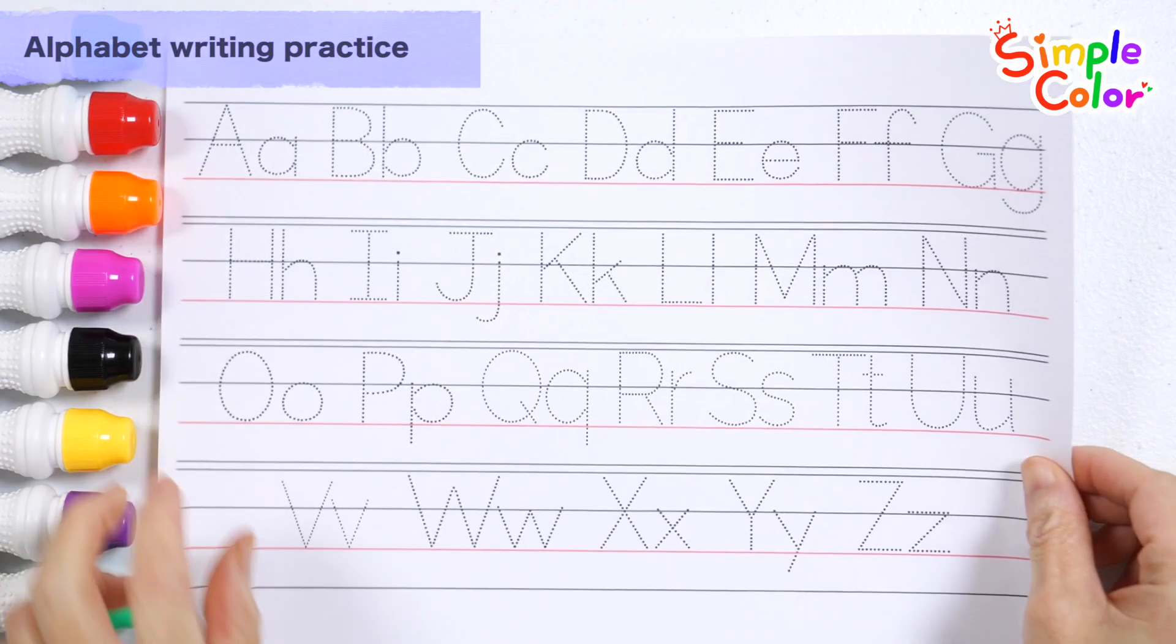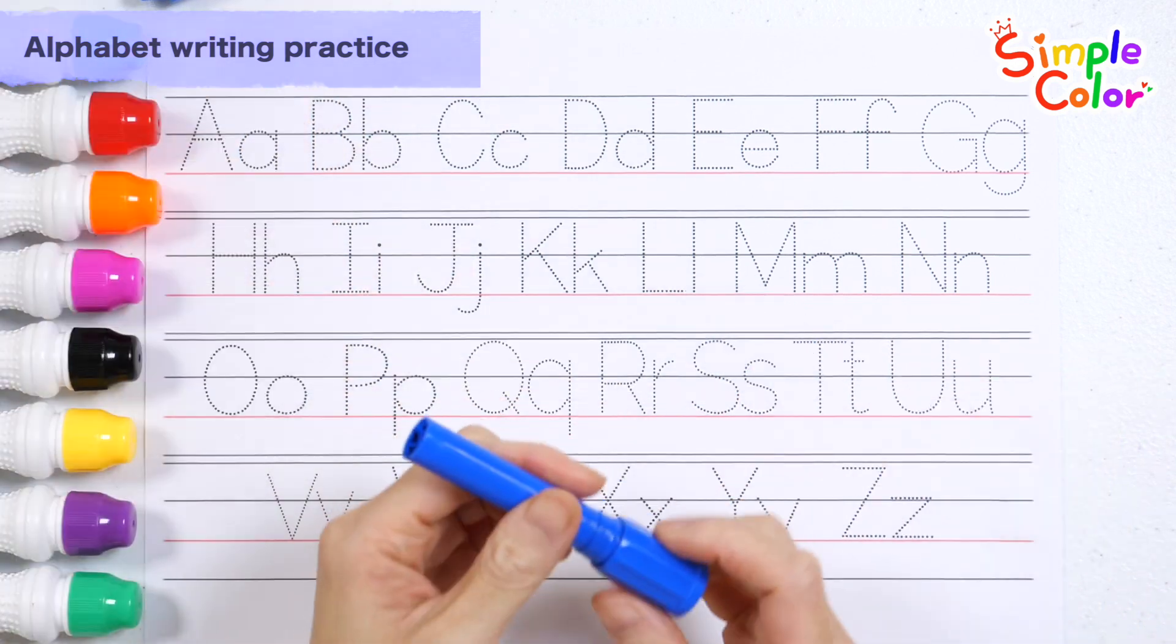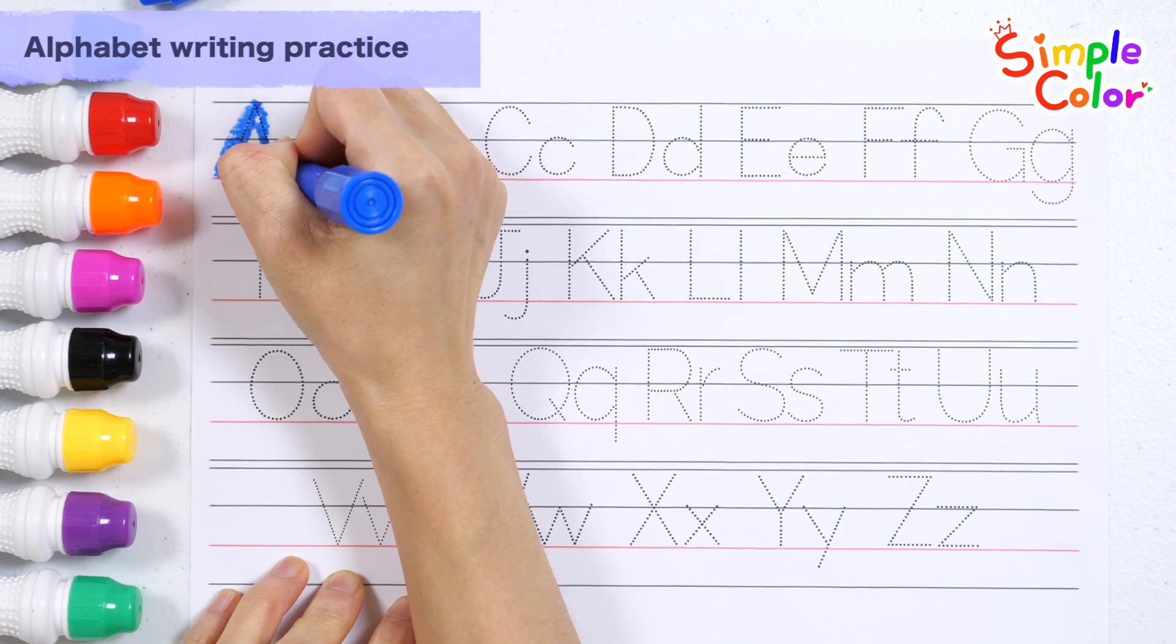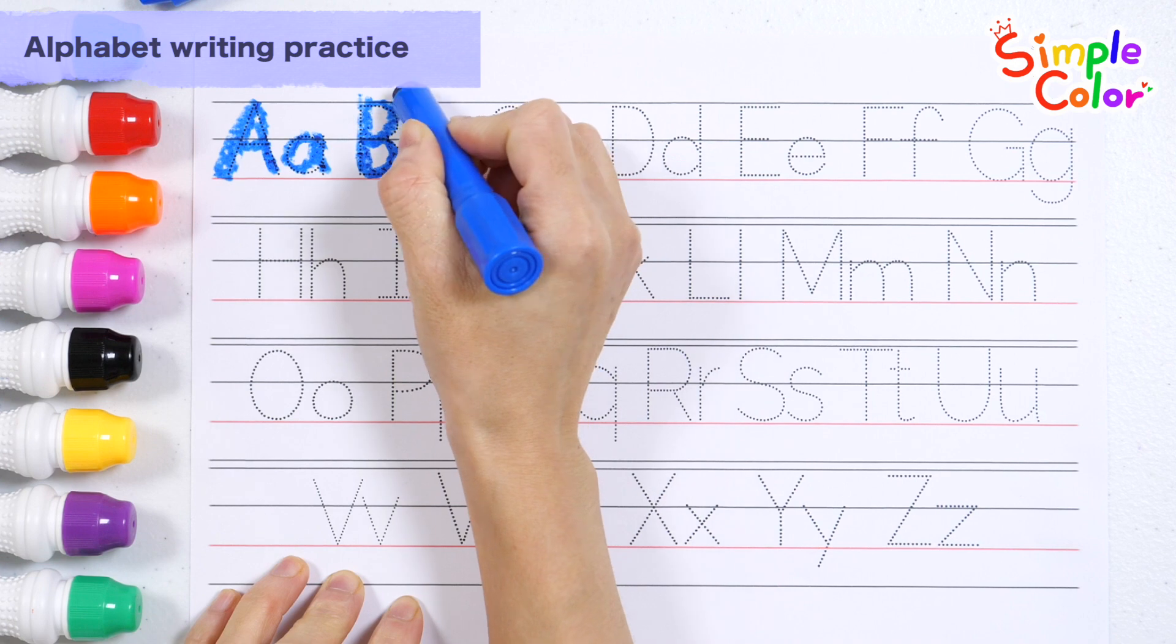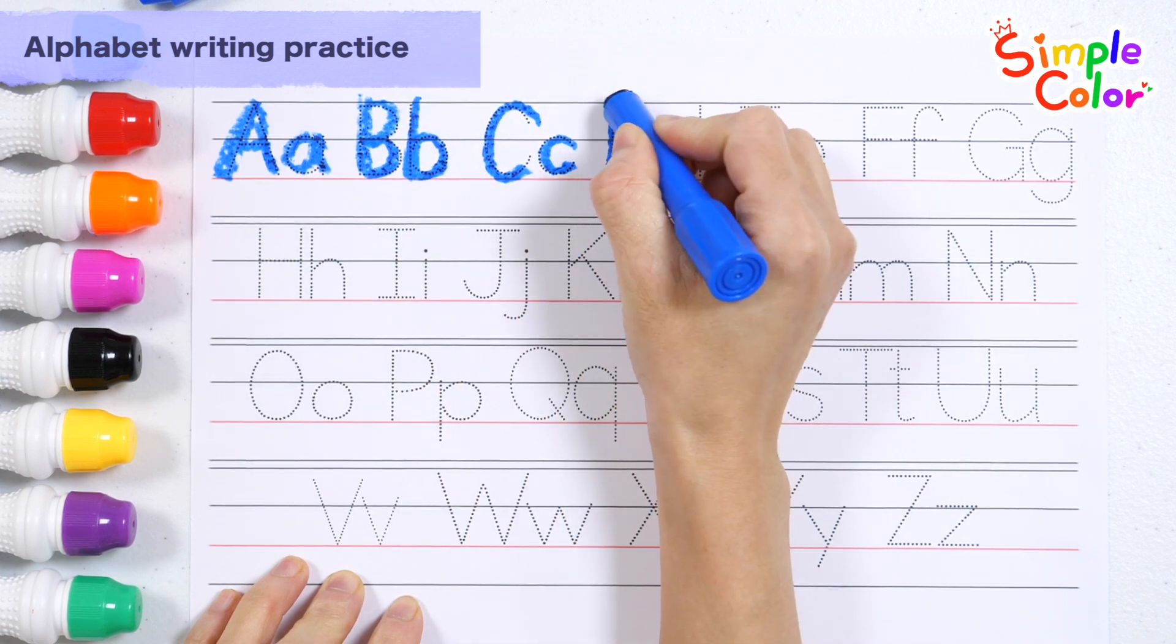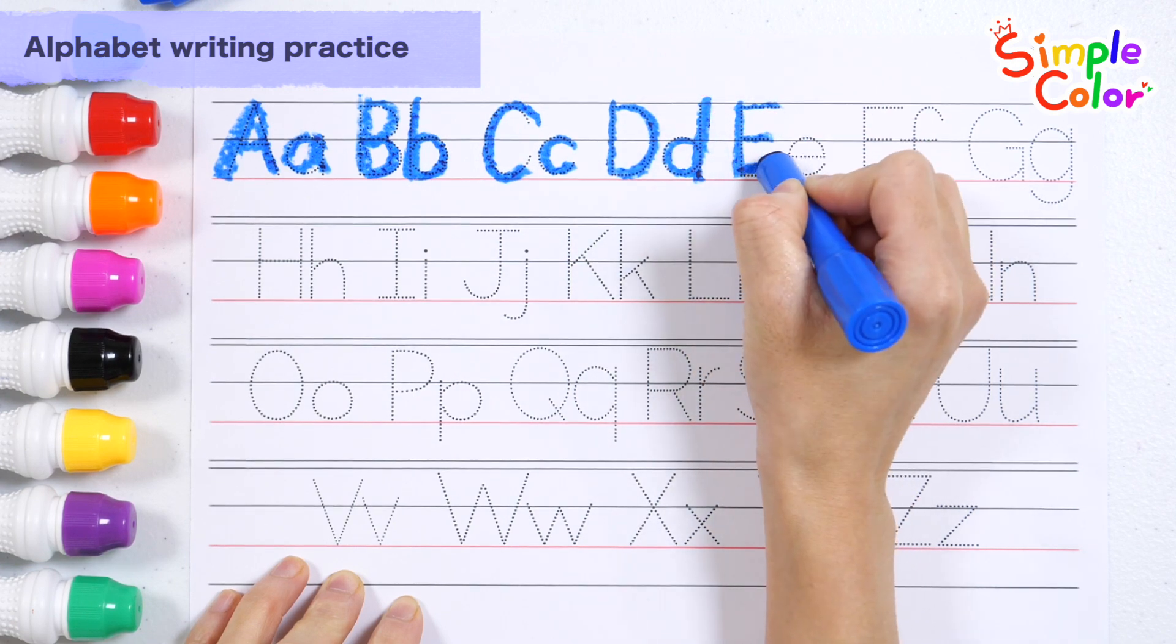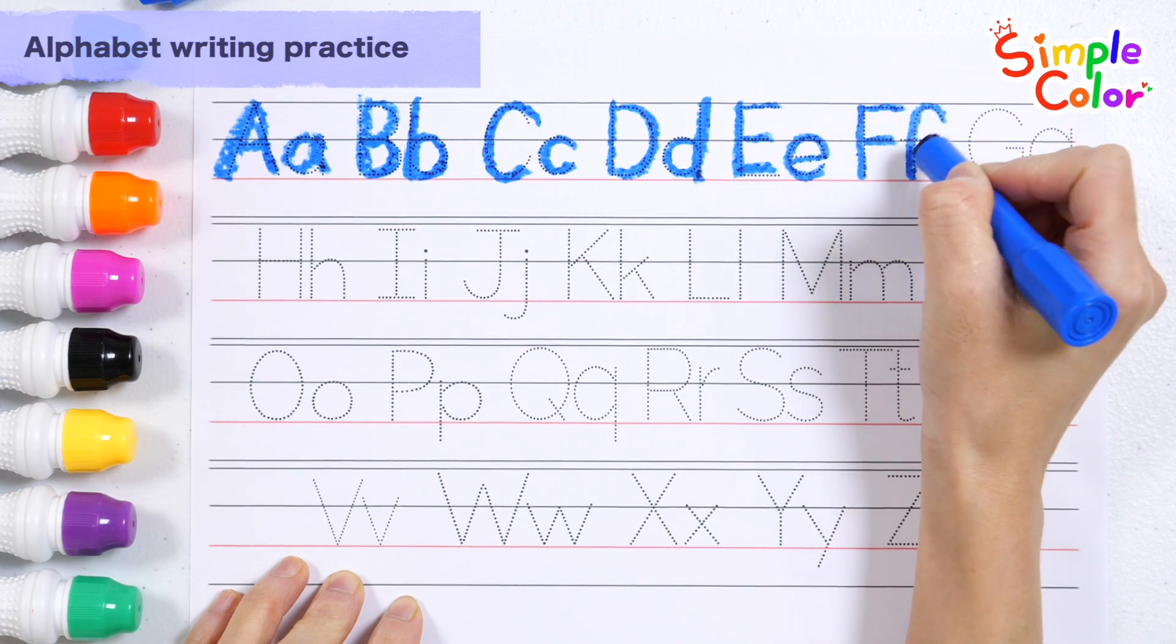Let's write and read uppercase and lowercase letters with blue crayon. A, a, B, C, D, E, F, f.